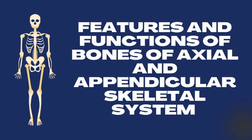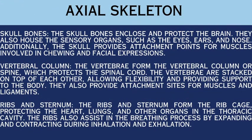Our next topic is features and functions of bones of the axial and appendicular skeletal system. For the axial skeleton: skull bones enclose and protect the brain and house sensory organs such as the eyes, ears, and nose. They also provide attachment points for muscles involved in chewing and facial expressions. The vertebral column protects the spinal cord, allows flexibility, provides body support, and offers attachment sites for muscles and ligaments.